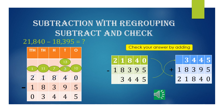Here you are going to learn about Subtract and Check. You are going to subtract 21,840 with 18,395. By subtracting, you get the answer 3,445. With this you are going to check your answer by adding. First, place the difference on top, followed by the subtrahend, and when you add them you will get the minuend. This is the procedure for checking your answer.